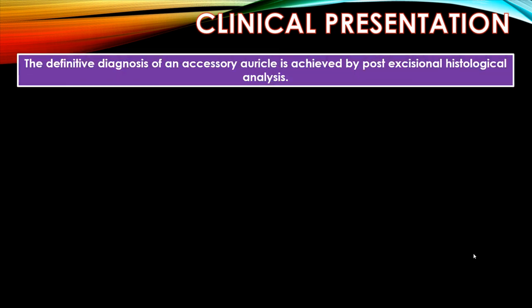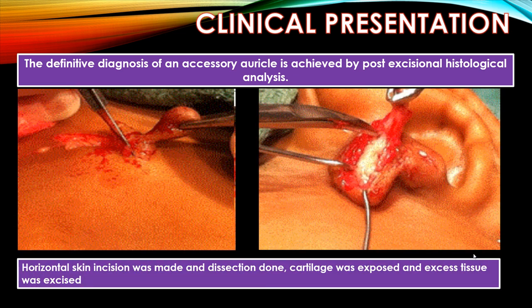The definitive diagnosis of an accessory auricle is achieved by post-excisional histological analysis. This is a simple surgical removal. A horizontal skin incision was made and dissection done. Cartilage was exposed and excess tissue was excised. This is the cartilage, which is whitish in color.